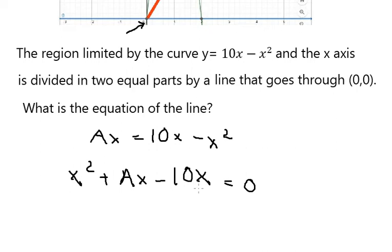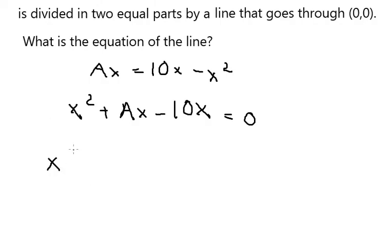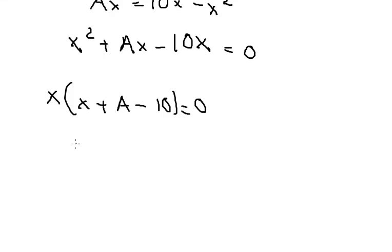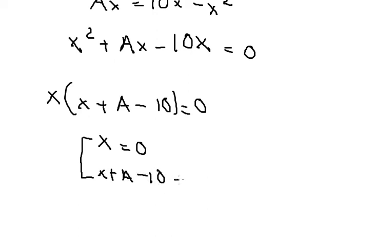Now we can do factorization by x. We have two solutions: x equals 0, and x plus A minus 10 equals 0, so x equals 10 minus capital A.